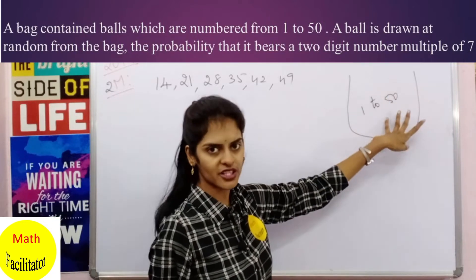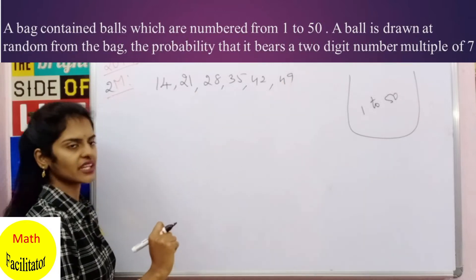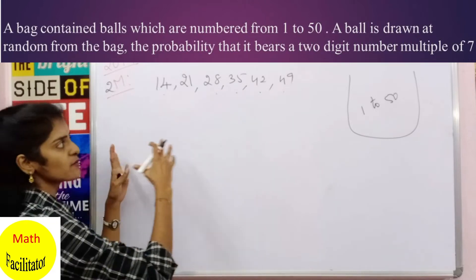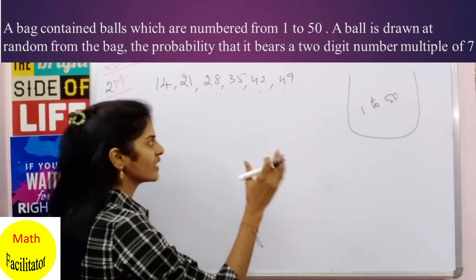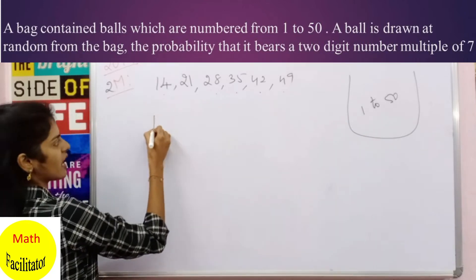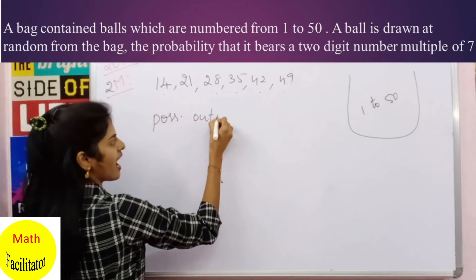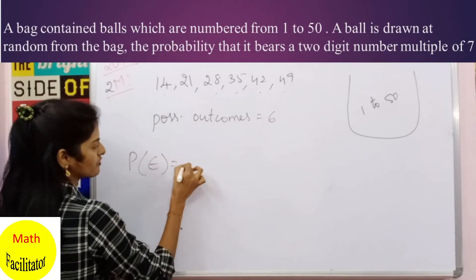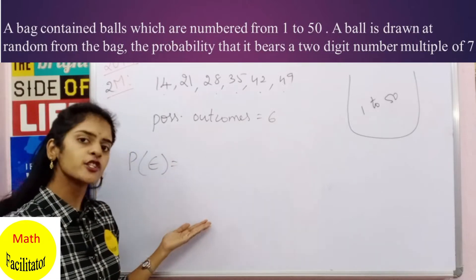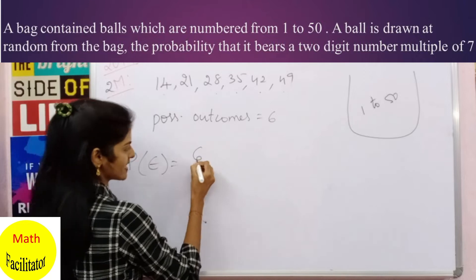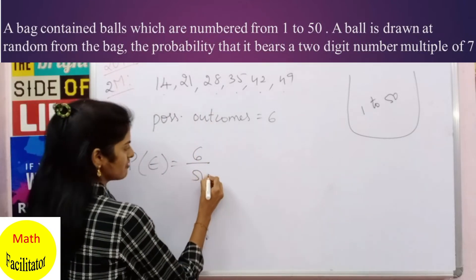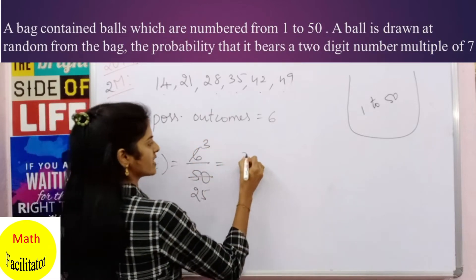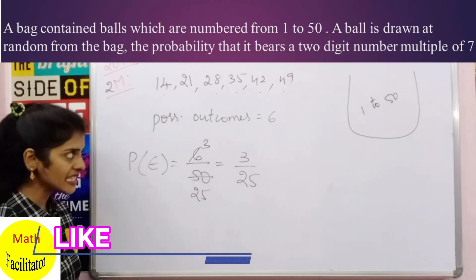The next multiple after 49 is 56, which is greater than 50, so we stop at 49. Counting these: 14, 21, 28, 35, 42, 49 — that gives us 6 two-digit multiples of 7. So the number of possible outcomes is 6. The total number of possible outcomes is 50. So the probability is 6/50, which simplifies to 3/25.